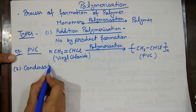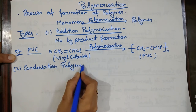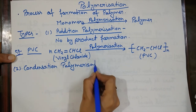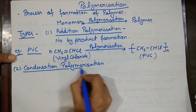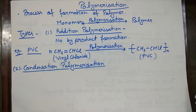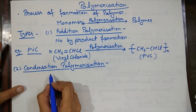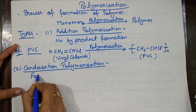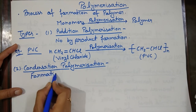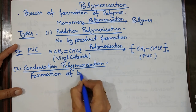Now moving to the second type of polymerization, which is condensation polymerization. In condensation polymerization, if byproducts are formed during the process, that kind of polymerization is called condensation polymerization — there is formation of a byproduct.